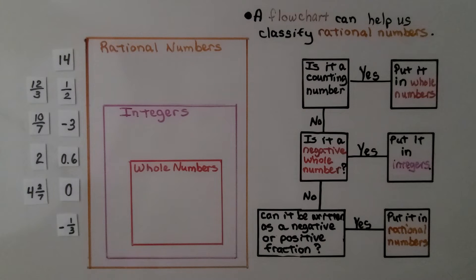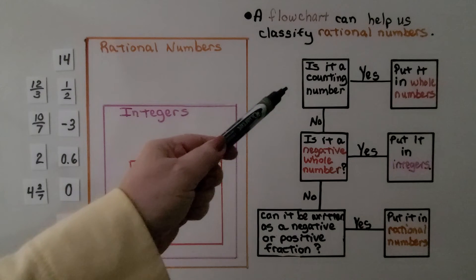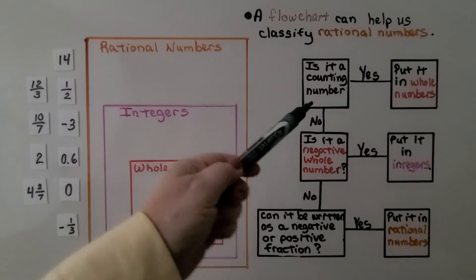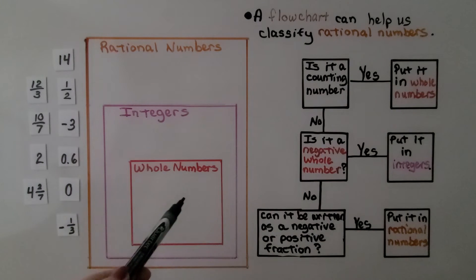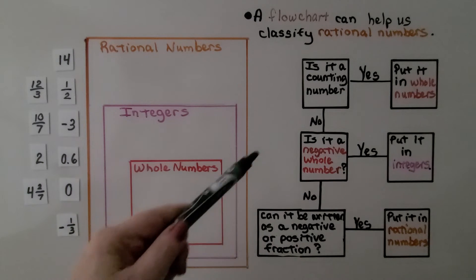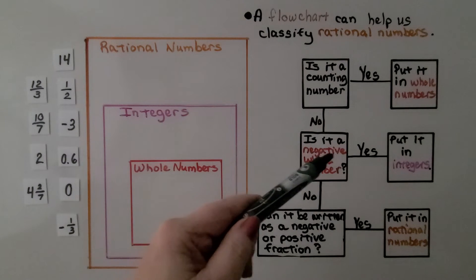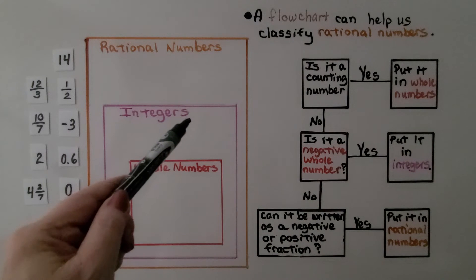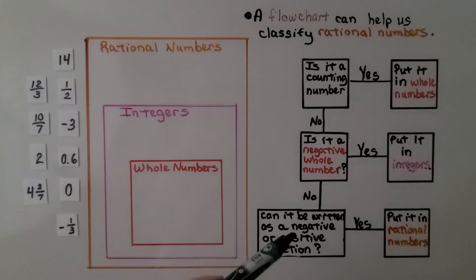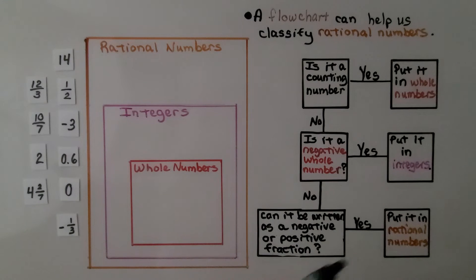A flow chart can help us classify rational numbers. We start by asking: is it a counting number? If yes, put it into whole numbers. If not, ask: is it a negative whole number? If yes, put it into integers. If not, ask: can it be written as a negative or positive fraction? If yes, put it into rational numbers.